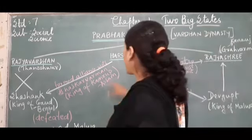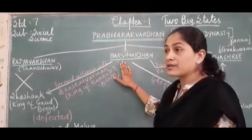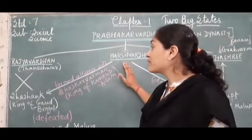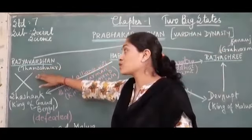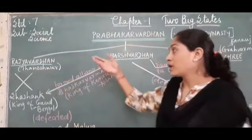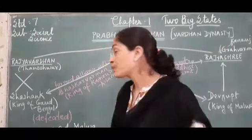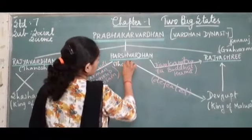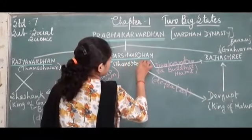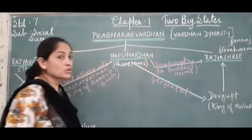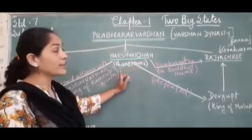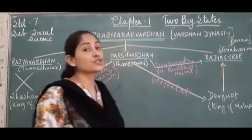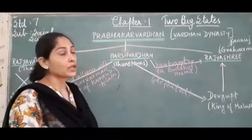As advised by all the ministers of his kingdom, Harshvardhan was given charge of Thaneshwar, because Thaneshwar was without a king. So Thaneshwar was now ruled by Harshvardhan. After becoming king of Thaneshwar, the very first thing he did was to free his sister Rajyashri from the clutches of Devguta.